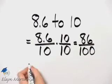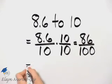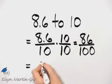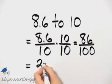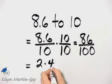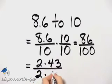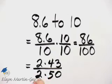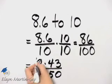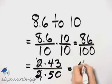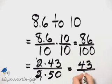86 and 100, I know there's at least a common factor of 2. 86 is 2 times 43, and 100 is 2 times 50, so I can divide out that common factor of 2 and I have 43 over 50.